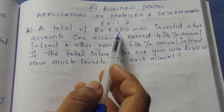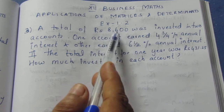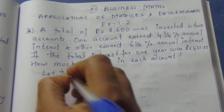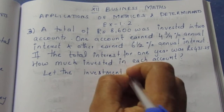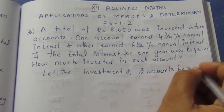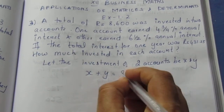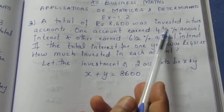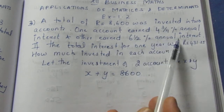Question: A total of Rs. 8,600 was invested in 2 accounts. If you add the 2 accounts it will be Rs. 8,600. One account earned 4¾% annual interest, the other earned 6½% annual interest.